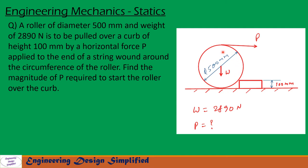So here we have a roller and a curve of 100 millimeter. Roller diameter is 500 millimeter and weight of the roller is 2890 newton acting downwards, and a force P is to be used to pull this roller over this curve. Let us see in the next slide how to solve this problem.